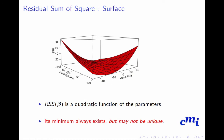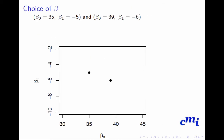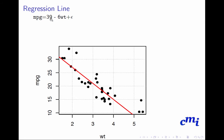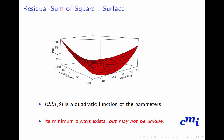For different values of β₀ and β₁ you get a straight line, and from that line you can compute the errors, square them, and sum them. For example, for β₀ = 39 and β₁ = −6 you get a particular line; for each data point you compute the difference (error), square it, and sum — that gives the RSS for that choice. You can do this for many choices and plot the resulting RSS values.